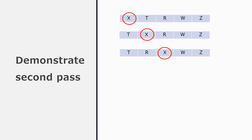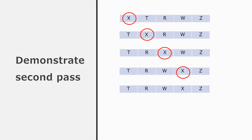Now compare X to W — the counter moves on. The final element: X compared to Z — those elements are the correct way round, the counter moves on. The second traversal is completed and there have been three swaps again, so swaps are still happening and the sort is not completed yet.